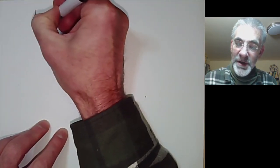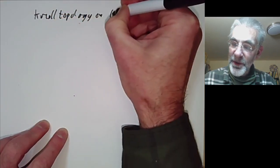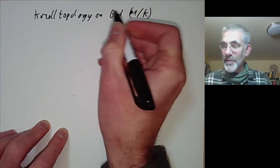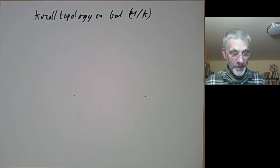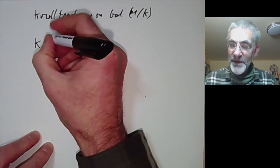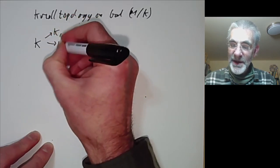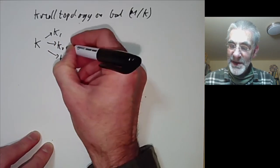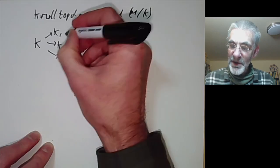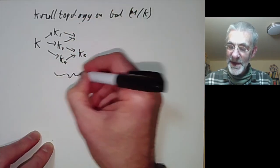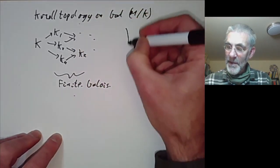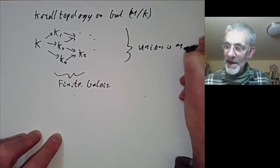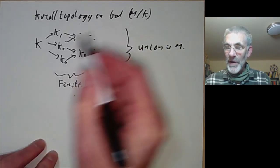So let's define the topology — sometimes called the Krull topology — on the Galois group of M over K. As a group, this is just defined as in the finite case: it's the automorphisms of the field M that fix every single element of K. We think of M as being the union of lots of finite extensions; in fact, we can assume they're finite and Galois if M is a Galois extension.